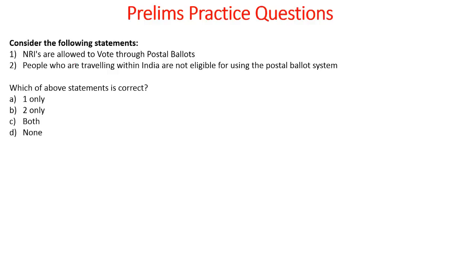Consider the following statements: NRIs are allowed to vote through postal ballots; people who are traveling within India are not eligible for using the postal ballot system. Which of the above statements is correct? The answer is statement two only. NRIs are not allowed to vote through postal ballots — they physically have to come down to India and vote in their constituency. There is no concept of postal ballots for NRIs.